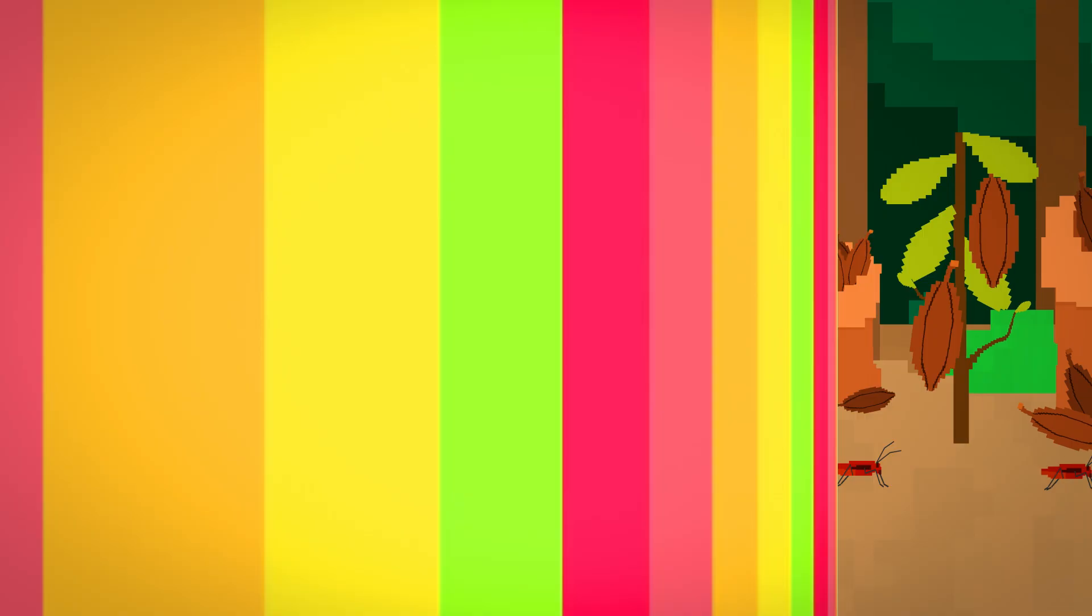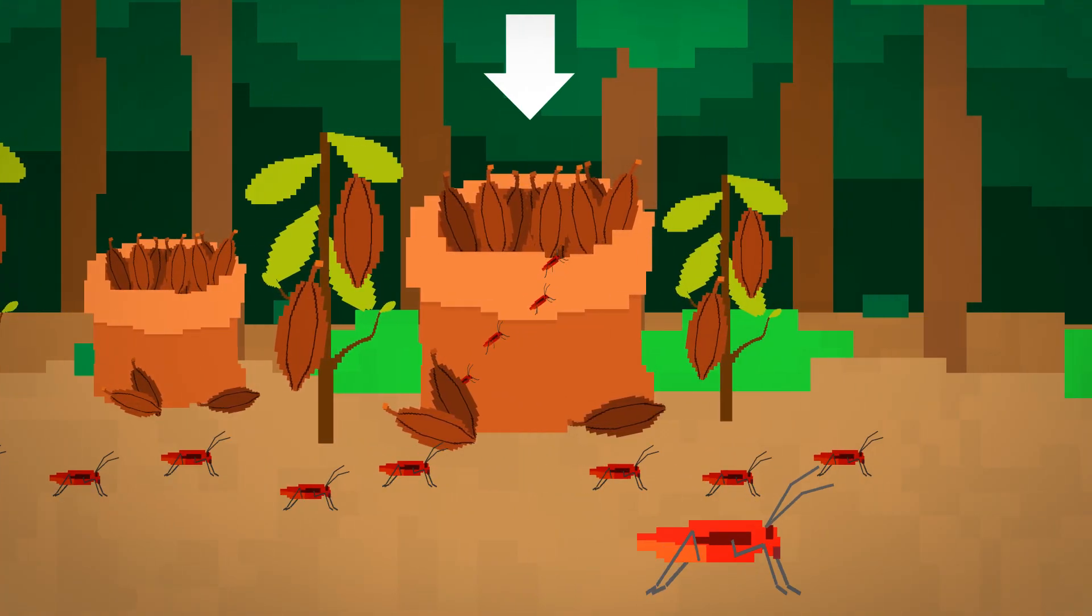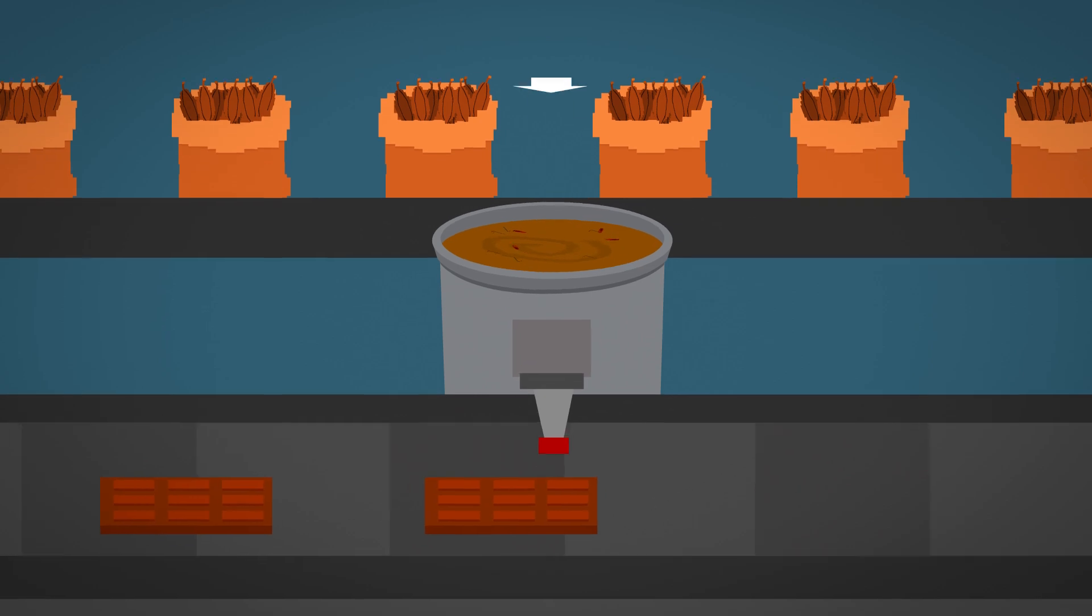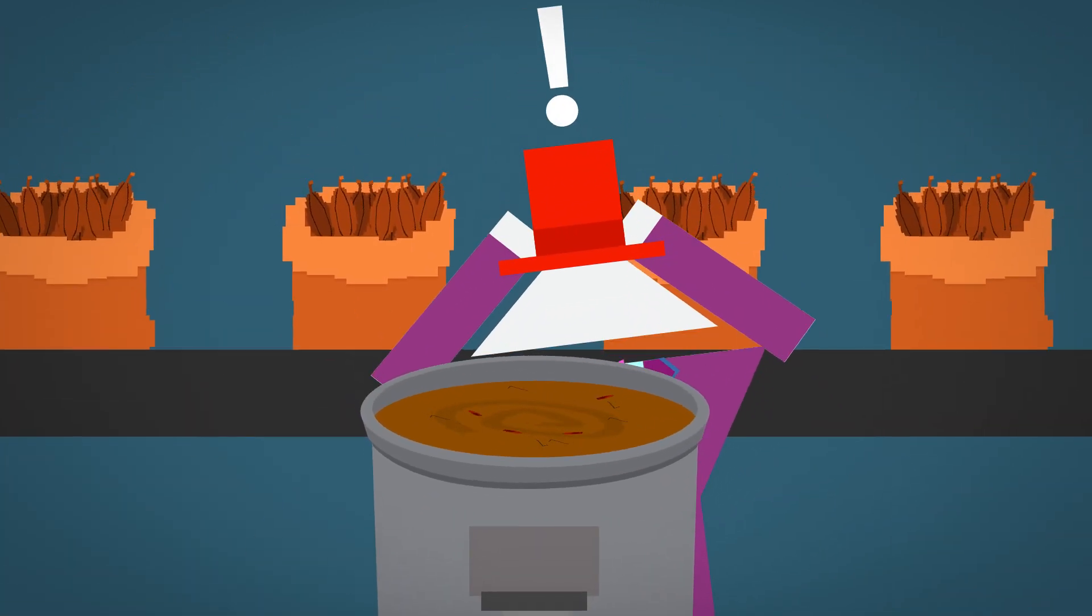Like many other foods, bugs often make their way in before or after the crop is harvested or while it's being processed. And once they're in, it's hard to get them back out.